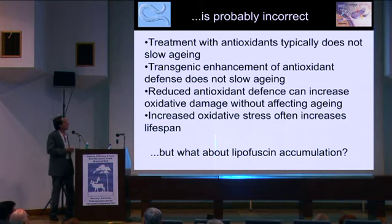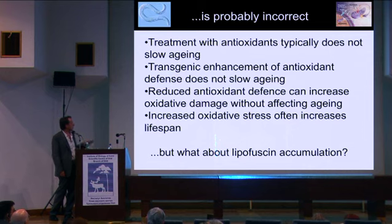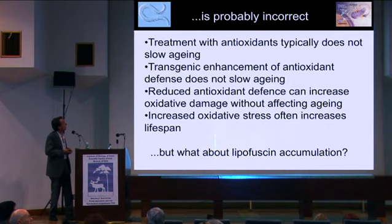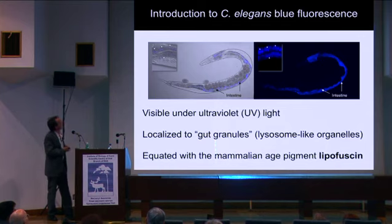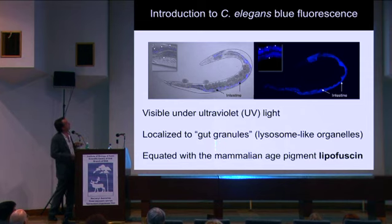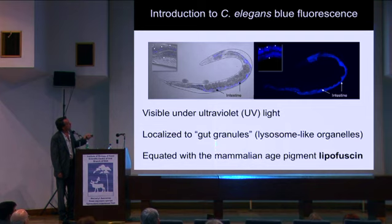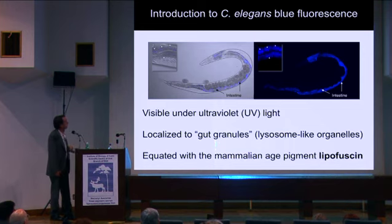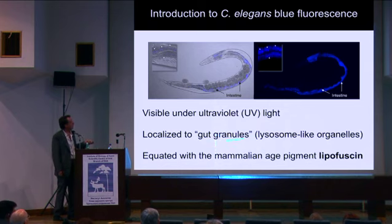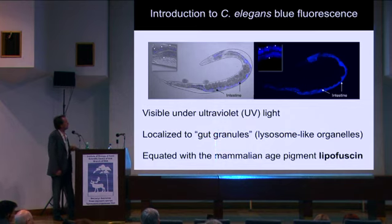We got into the practice of testing every aspect of the theory. One of the reasons for thinking that the theory is perhaps true for C. elegans is the accumulation of lipofuscin during aging. I'll need to introduce the central topic of the talk, which is the blue fluorescence that you see in C. elegans. Under UV light, you can see the worm shows this blue fluorescence — magnified, it shows that the fluorescence is in the intestine and it's punctate, localized to what are known as gut granules, which are quite large lysosome-like organelles in the gut.